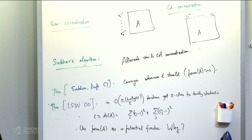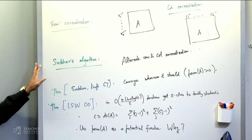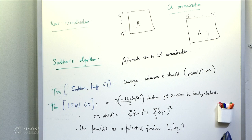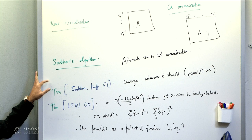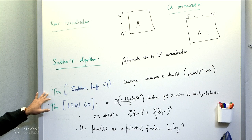Actually, this algorithm was not proposed by Sinkhorn-Knopp; someone else proposed it before. But Sinkhorn-Knopp proved it converges to something doubly stochastic. There's a theorem from Sinkhorn and Knopp in 1967 saying this algorithm converges whenever it should — meaning whenever the permanent is greater than zero. Sinkhorn in 1964 proved a weaker theorem that the algorithm converges when all entries are positive, but that was rectified in the follow-up work.